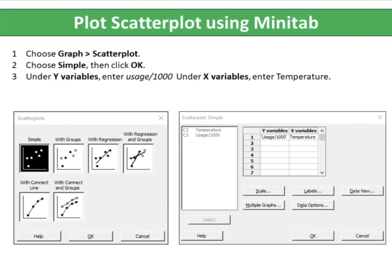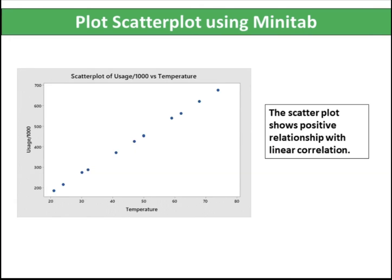Choose Graph, Scatter Plot. Choose Simple, then click OK. Under Y Variables, enter Usage Per 1000. Under X Variables, enter Temperature. The Scatter Plot shows a positive relationship with linear correlation.